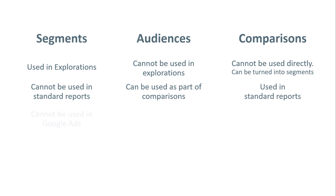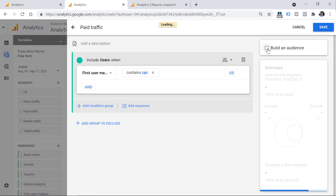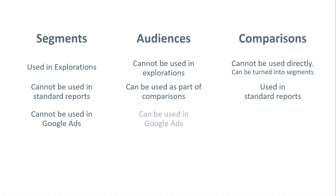Now let's talk about Google Ads. Segments cannot be used in Google Ads. If you want to import a segment into Google Ads, you would have to convert it into an audience — click the three dots next to the segment, then Edit, then Build an Audience. Audiences can definitely be used in Google Ads as remarketing lists, and I have a tutorial on that linked below. Comparisons cannot be used as remarketing lists in Google Ads.